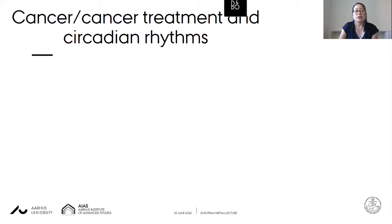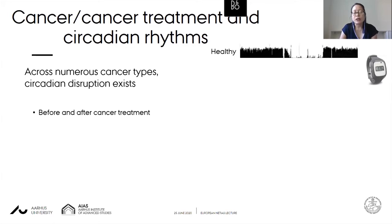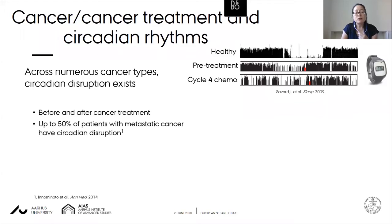Across numerous cancer types, circadian disruption has been found to exist both before and after cancer treatment. Using actigraphy, a healthy person's rhythms show a density of activity during the day and almost no activity at night, meaning the person is sleeping well. Pre-treatment in a breast cancer patient, we still see this pattern but it becomes more blurred, and by cycle four of chemotherapy it is much more disrupted. Up to 50% of patients with metastatic cancer have circadian disruption.